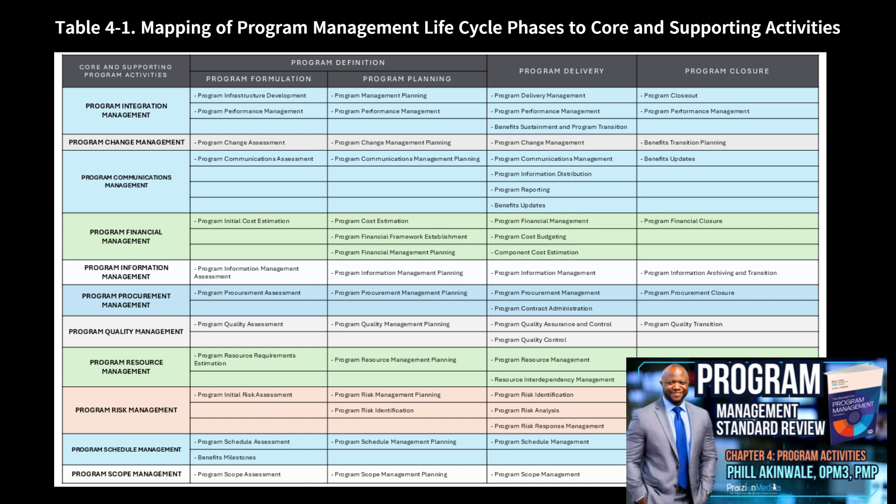We're going to break it down into digestible sections, and you'll see that it's all organized under a simple, high-level mnemonic I like to call DDC — definition, delivery, closure — or as I often say, 'don't do coke.' These are the three key domains of program management. The table we're studying shows where the core and supporting program activities intersect with the program lifecycle phases. Under each domain — definition, delivery, and closure — we'll explore specific sub-activities from integration to scope management. These sub-activities appear across multiple phases, but that's because they evolve as the program progresses.